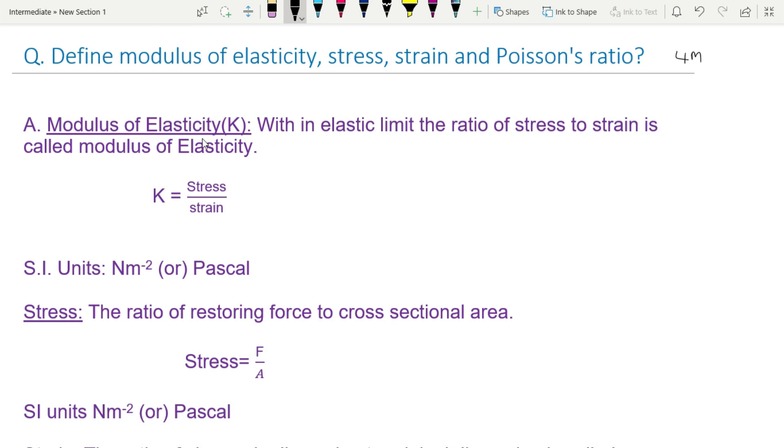First definition is modulus of elasticity. This symbol is K. Within elastic limit, the ratio of stress to strain is called modulus of elasticity. Stress is proportional to strain. Stress is equal to some constant into strain. So K is equal to stress by strain.